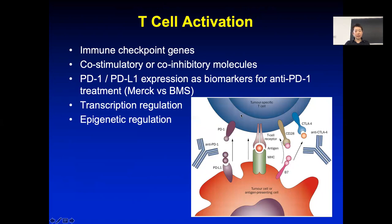There are genes in the T cells that are activated. If you have immune checkpoint genes such as PD-1 or CTLA-4, if they are high and also bound by the ligand, they will make the T cell inactive — then the T cell can't do the killing very well. There are also co-stimulatory or co-inhibitory molecules, which are also important.